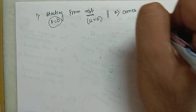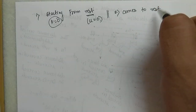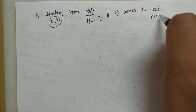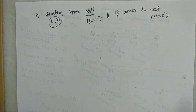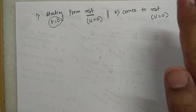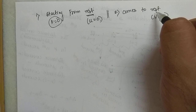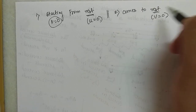Second term: 'comes to rest' — when an object comes to rest, it means its final velocity is equal to 0. The object's speed is decreasing gradually and finally it comes to rest, so the final velocity v = 0.